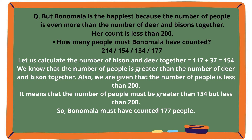Bonomala is the happiest because the number of people is even more than the number of deer and bisons together. Her count is less than 200. How many people must Bonomala have counted? The number of bison and deer together is 117 plus 37, which equals 154. The number of people is greater than 154 but less than 200. So, Bonomala must have counted 177 people.